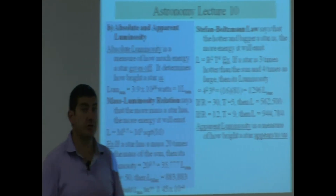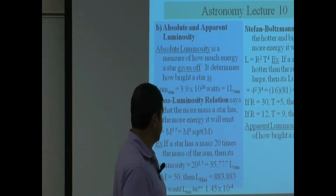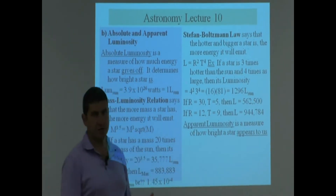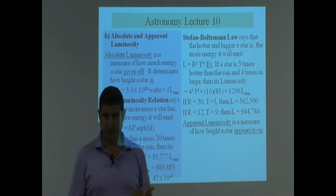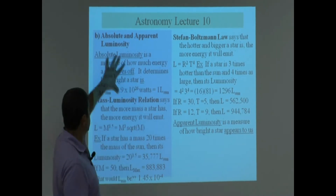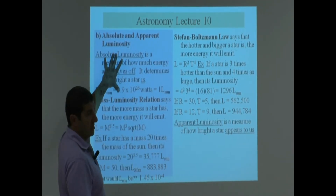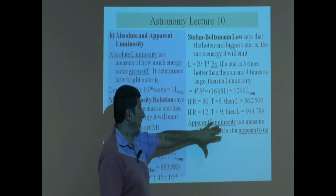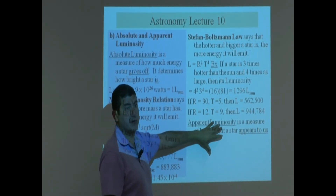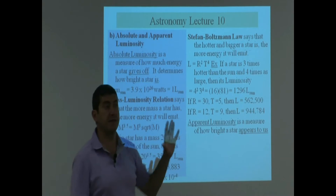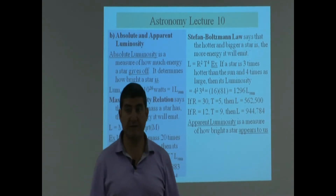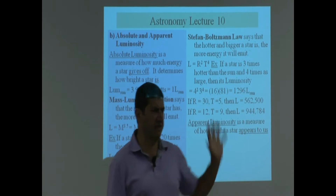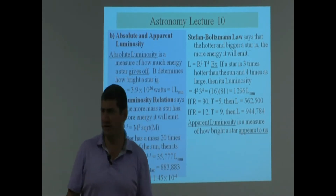Now we talk about apparent luminosity. Apparent luminosity is a measure of how bright a star appears to us. The difference is absolute luminosity is how bright it actually is, while apparent luminosity is how bright it appears to us. So a star can be very, very bright, but if it's very far away from us — millions of light years — it's not going to appear very bright.